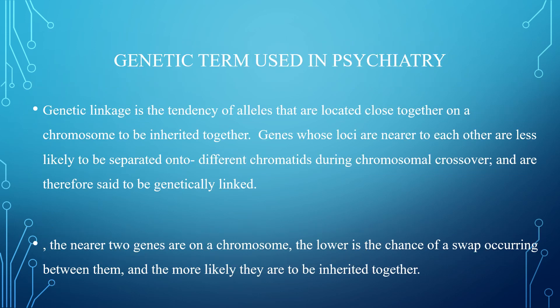Genetic linkage is the tendency of alleles that are located close together on a chromosome to be inherited together. Genes whose loci are nearer to each other are less likely to be separated onto different chromatids during chromosomal crossover and are therefore called genetically linked. To simplify: two close alleles are transferred together in the chromatid whose loci are very close to each other. The nearer the two genes are on the chromosome, the lower is the chance of a swap occurring between them and the more likely they are to be inherited together.